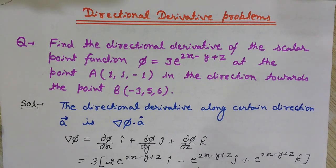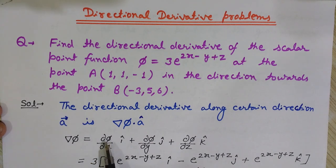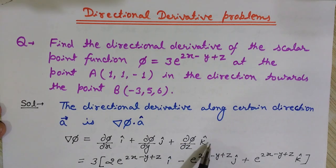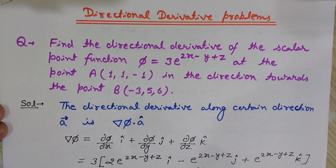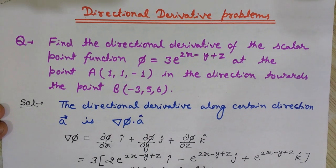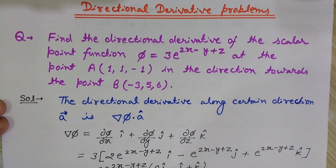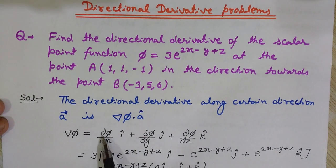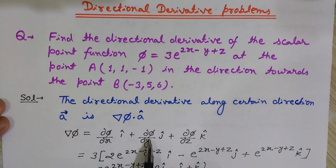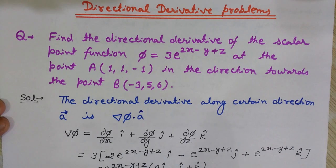First we will find the gradient. By definition, the gradient is: ∂φ/∂x î + ∂φ/∂y ĵ + ∂φ/∂z k̂, where î, ĵ, and k̂ are the unit vectors along the x, y, and z axes. These are the partial derivatives of the scalar function φ with respect to x, y, and z respectively.